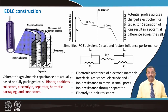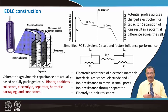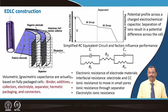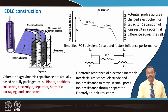Volumetric or gravimetric capacity should be calculated based on the fully packaged cell, not only one or two electrodes. When considering the full packaged cell, binder, current collector, additives, electrolyte, separator, hermetic packaging, and connectors must all be included by weight or volume for a reasonable value. In research papers, people often consider only active material weight, giving a large value, but including all construction material — dead weight — significantly lowers the value.